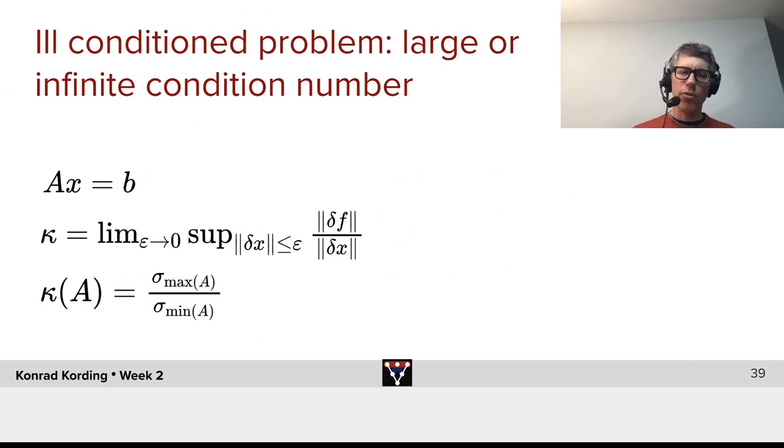Let's say we want to solve for Ax = b, which is just linear regression here. Now, the condition number is defined as the limit of epsilon as we make it small of the largest value that